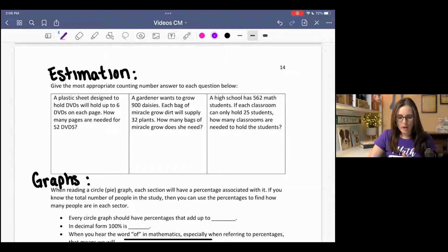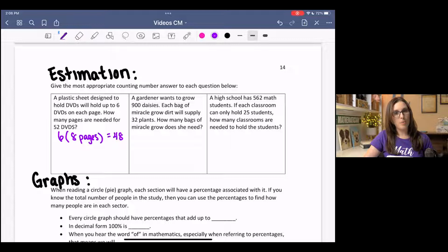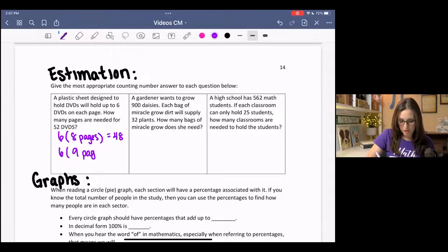So I know that if it were 54, it would divide evenly. So I'm going to go around there. I'm going to do 6 times 8 pages is going to be 48 DVDs. So if I bought only 8 pages, I'm not going to have enough, but if I bought 9 pages or sheets, I think I should say sheets,